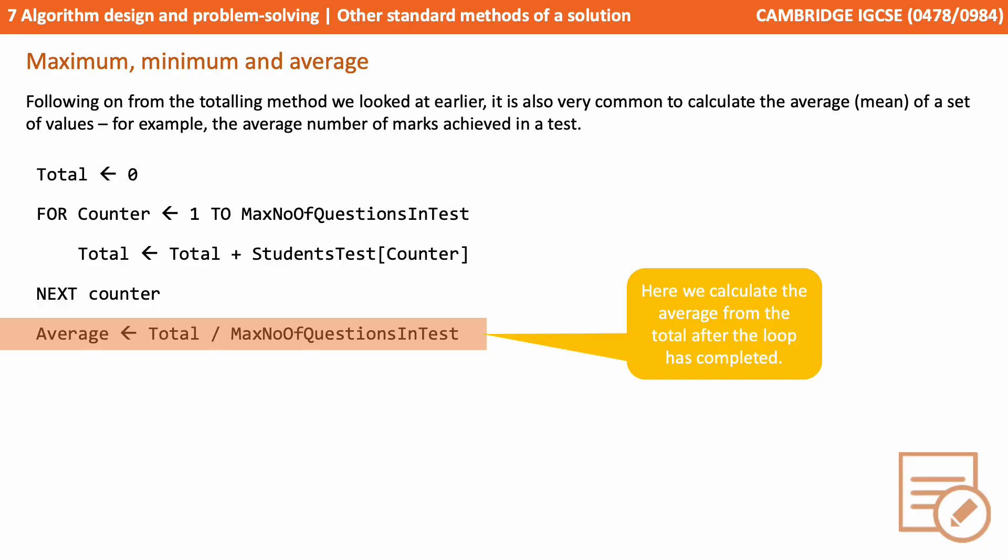Here we see the same code as earlier where we're totalling up the number of marks a student has in a test. Once we exit the loop we calculate the average from the total.